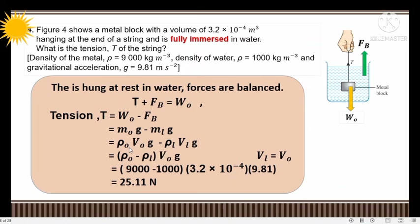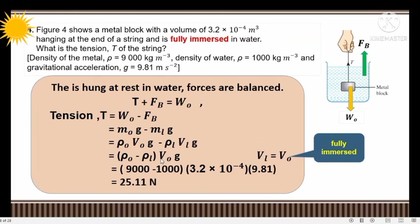Weight of object = mass × g = rho_object × V × g. Buoyant force = rho_liquid × V_displaced × g. Since fully immersed, volume of liquid displaced equals volume of object. Factorizing: T = (rho_object − rho_liquid) × V × g = (9000 − 1000) × 3.2 × 10⁻⁴ × 9.81 = 25.11 N. So the tension in the string is 25.11 N.